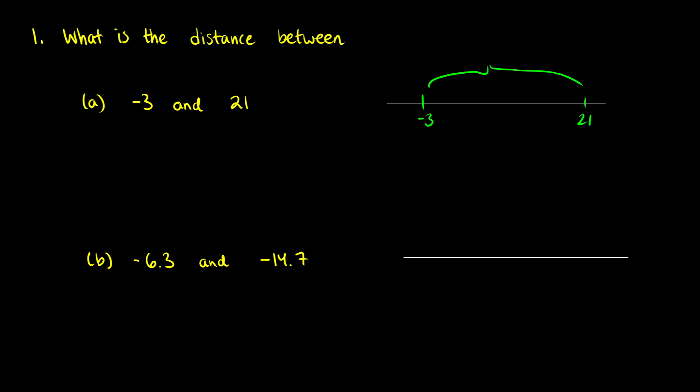With our formula, we just subtract one number from the other with the absolute value, and it doesn't matter which one we do first. So we can take negative 3 minus 21 or 21 minus negative 3, whichever one you find easier. Let's do negative 3 minus 21. We want to take the absolute value of that. We're going to end up with the absolute value of negative 24, and that gives us a solution of 24.